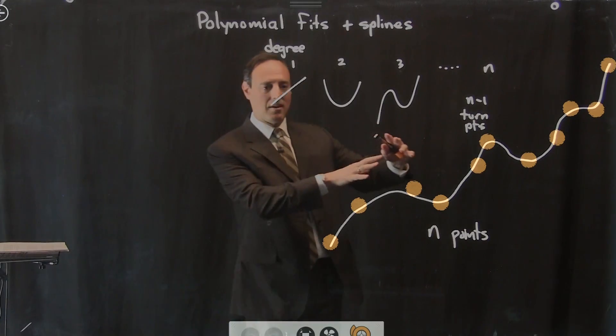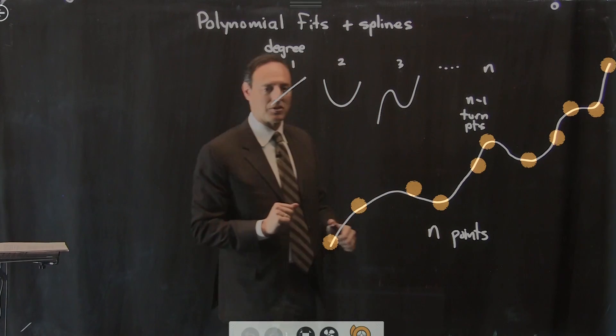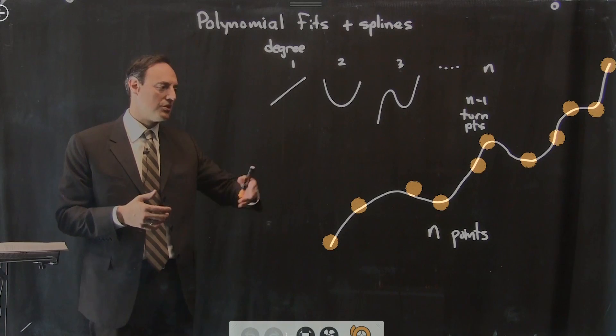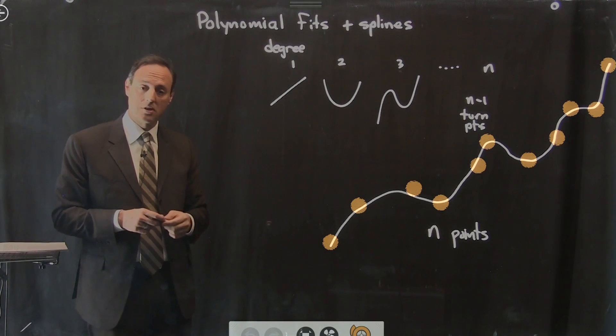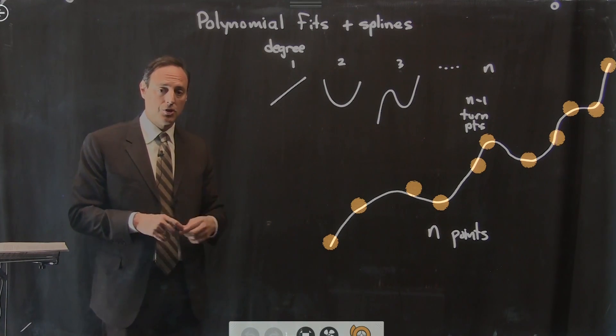And what it does is it fits the data very well in the middle. And at the edges, you see huge fluctuations that are completely unreasonable. Okay? Part of what a data curve fit should do is give you something that looks fairly reasonable, like what we're looking at right here. Okay? And that's not what a polynomial fit will do for you.